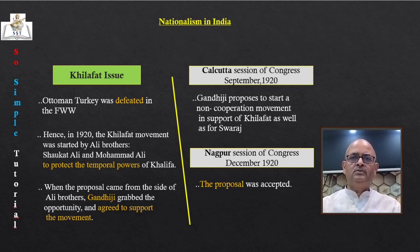The Rowlatt Satyagraha had led to the Jallianwala Bagh incident. Now let us discuss the Khilafat issue. The First World War ended with the defeat of Turkey — Germany, Austria and Ottoman Turkey lost. The British and its allies partitioned Turkey, and the Sultan of Turkey was deprived of much of his authority. The Sultan was not simply a ruler — he was also the Khalifa, the supreme religious head of all Muslims across the world.